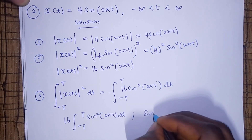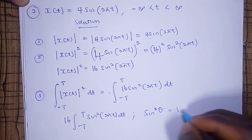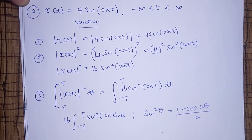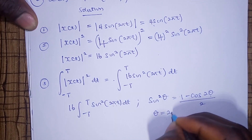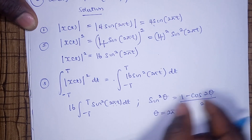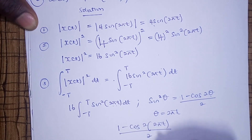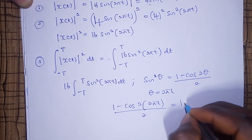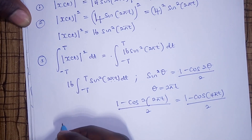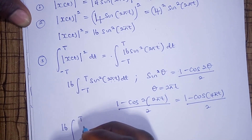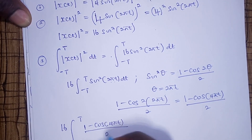Now, recall that whenever we have sine squared theta and we need to integrate it, we convert it using the identity: sine squared theta equals (1 minus cos 2 theta) over 2. Here, theta is 2 pi t. So sine squared 2 pi t becomes (1 minus cos 4 pi t) over 2. We substitute this in to get 16 times the integral from negative T to T of (1 minus cos 4 pi t) over 2 dt.